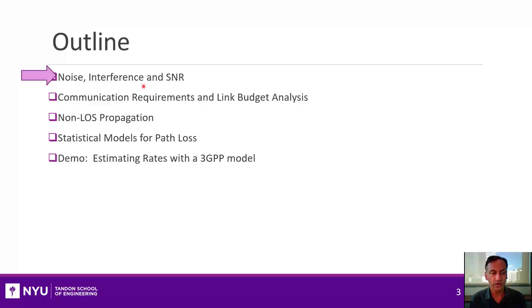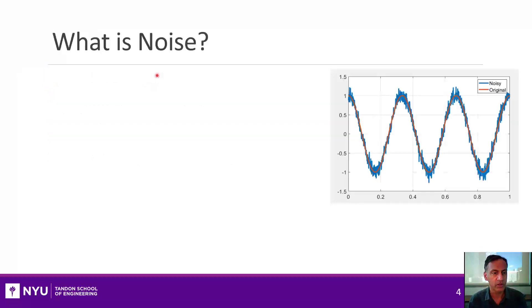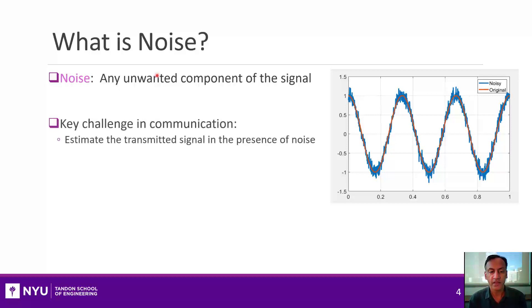Alright, I want to start this unit with the discussion of how to quantify noise and a very key quantity for any types of discussion on requirements, which is the signal to noise ratio. So let's start off with what is noise, and we'll just refer to noise as any unwanted component of the signal, that's any component that's not containing the information coming from the transmitter. And the key challenge in any communication system is really to estimate that transmitted signal that is the desired component in the presence of noise.